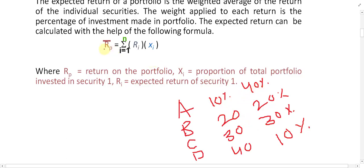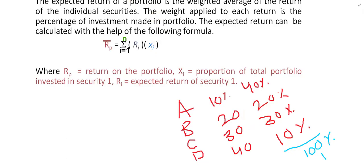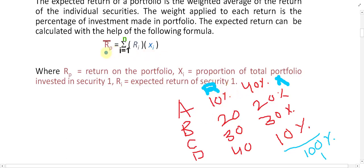The formula is: R̄_P (expected return of the portfolio) equals R multiplied by X, summed across all securities. Here, R means the return of each security, and X means the proportion of investment. The total of all proportions should not exceed 100% — or if expressed as a decimal, should not exceed 1. This represents your total capital.